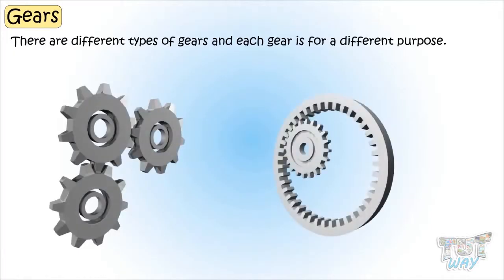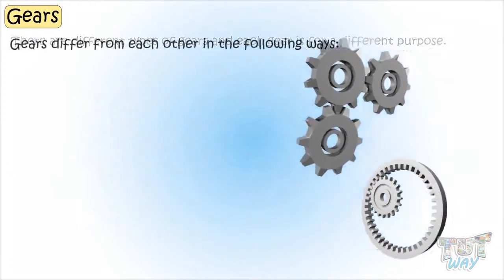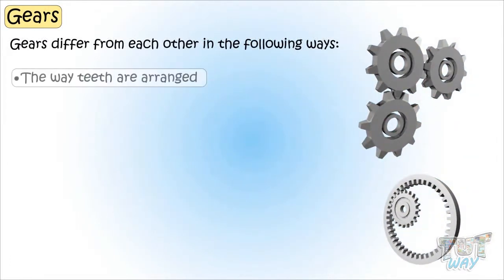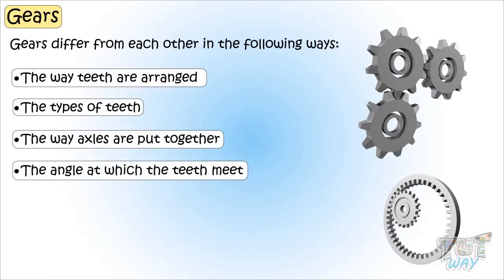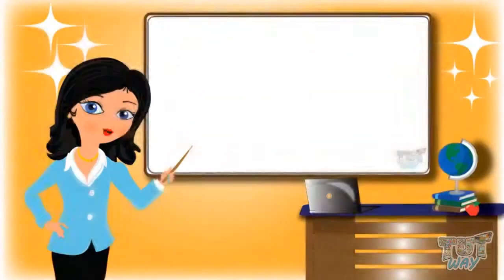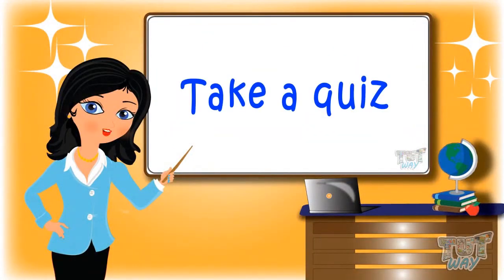Gears can change the direction of movement too. There are different types of gears, and each gear is for a different purpose. Gears differ from each other in the way teeth are arranged, the types of teeth, the way axles are put together, and the angles at which the teeth meet. We will learn about each gear in our next lesson. Now go ahead and take a quiz to learn more. Bye bye!